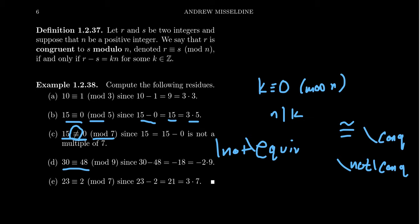30 is congruent to 48 mod 9 because the difference of 30 and 48 is negative 18. Negative is acceptable here because negative 18 is divisible by 9 - it's negative 2 times 9. 23 is congruent to 2 mod 7 because their difference is 21, which is 3 times 7. You get the idea.